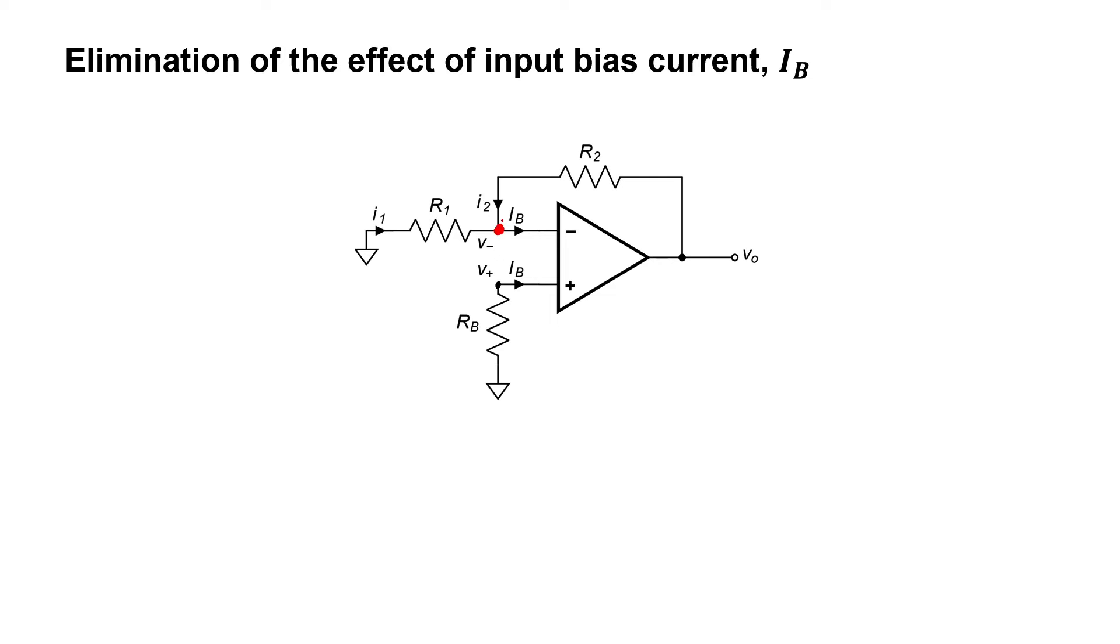Let's first sum the currents at node V minus. Using the Kirchhoff current law, we know that currents in equal current out. Let's now use Ohm's law to find both of these currents. For I1, we have zero volts on the left and V minus on the right. The voltage drop is across R1. Then for current I2, we have V out on one side, and then following the current, we have V minus on the other side, and that voltage drops across R2.